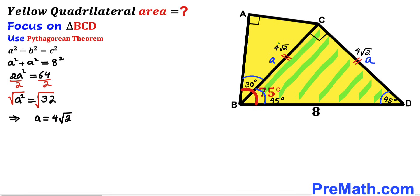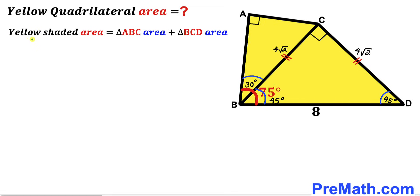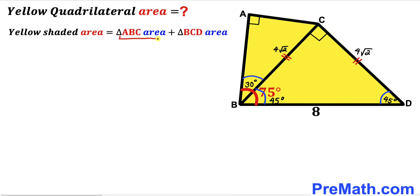So our lowercase a value is 4√2, and both equal sides of triangle BCD are 4√2. Now let's observe that the yellow shaded quadrilateral area equals the sum of the two individual right triangles: area of triangle ABC plus area of triangle BCD.